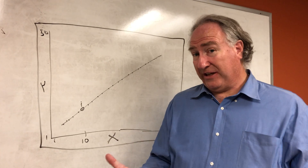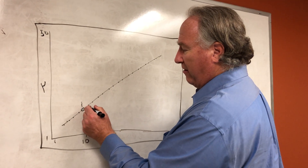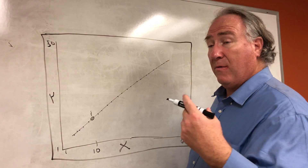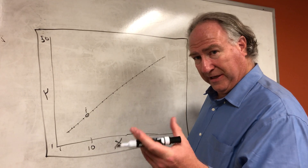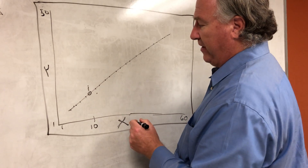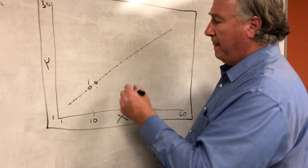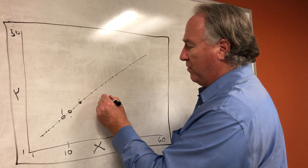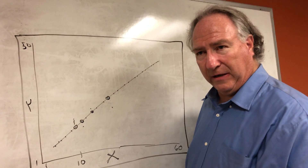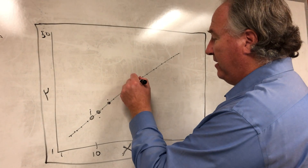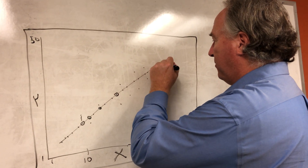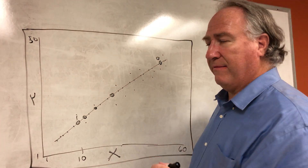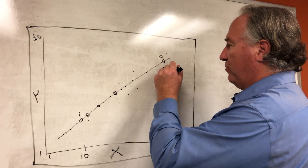This is where the assumption of homoscedasticity comes in. For each person, we have a predicted value from the model for Y and their actual observed value from the measure. Here we get an actual observed value relative to that predicted value, and this continues for each person — their actual observed score relative to the predicted score on the outcome variable Y from the model.